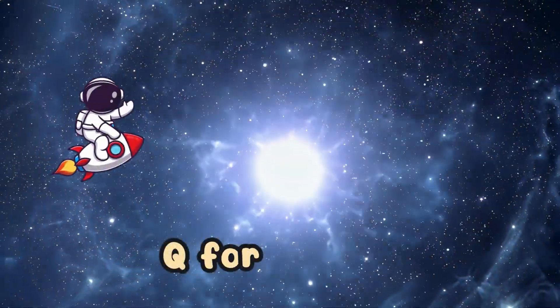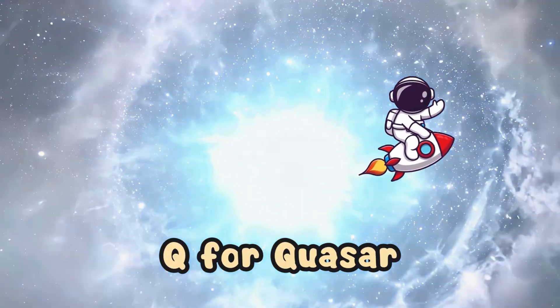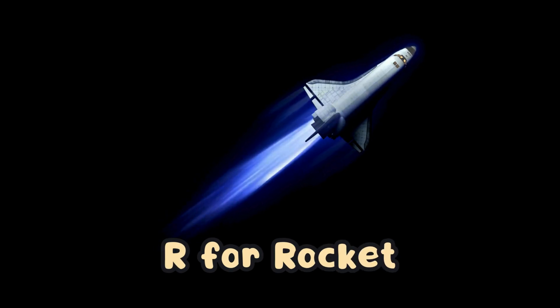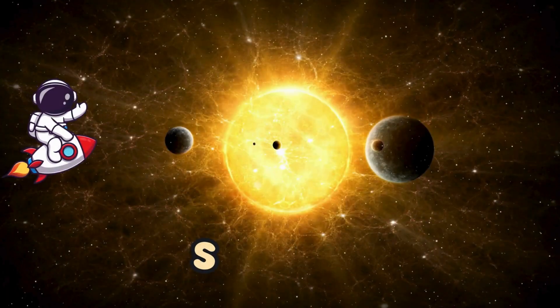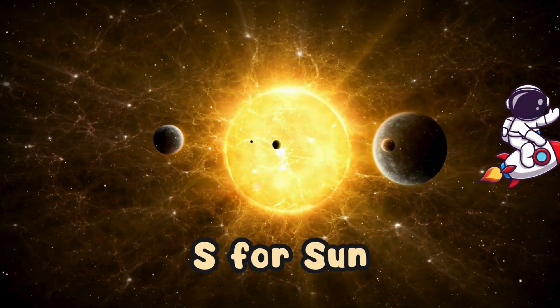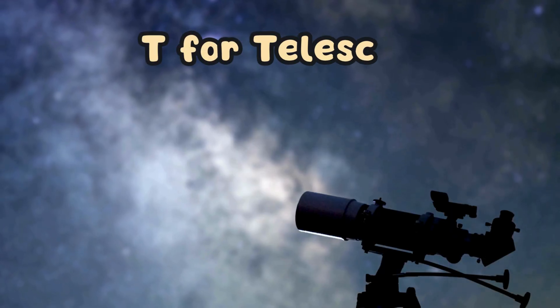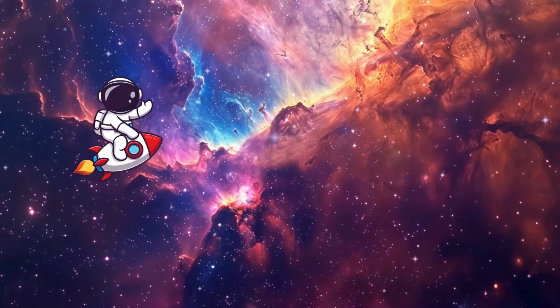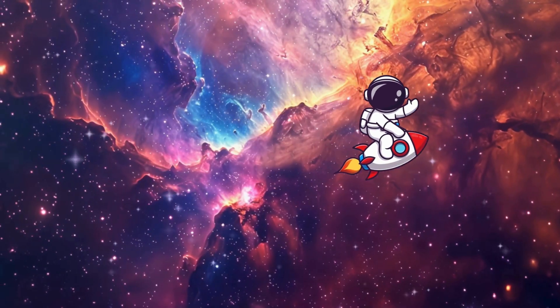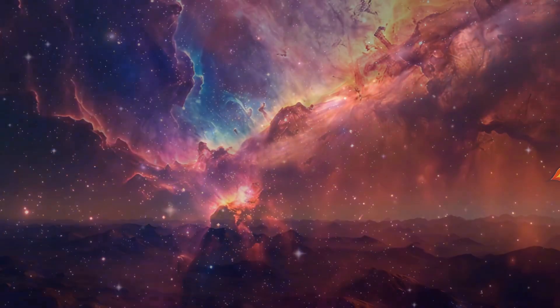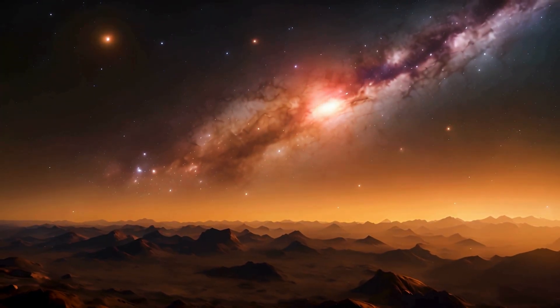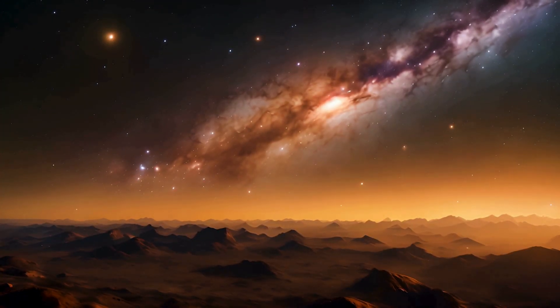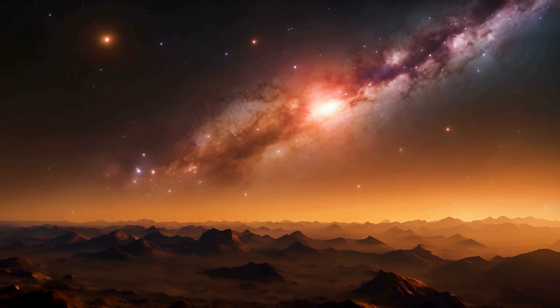Q for quasar, shining so bright. R for rocket, ready for flight. S for sun, shining so gold. T for telescope, seeing stories untold. Come on kids, let's sing and play, learning the stars in a fun new way. From A to Z we're gonna see the wonders of space, so wild and free.